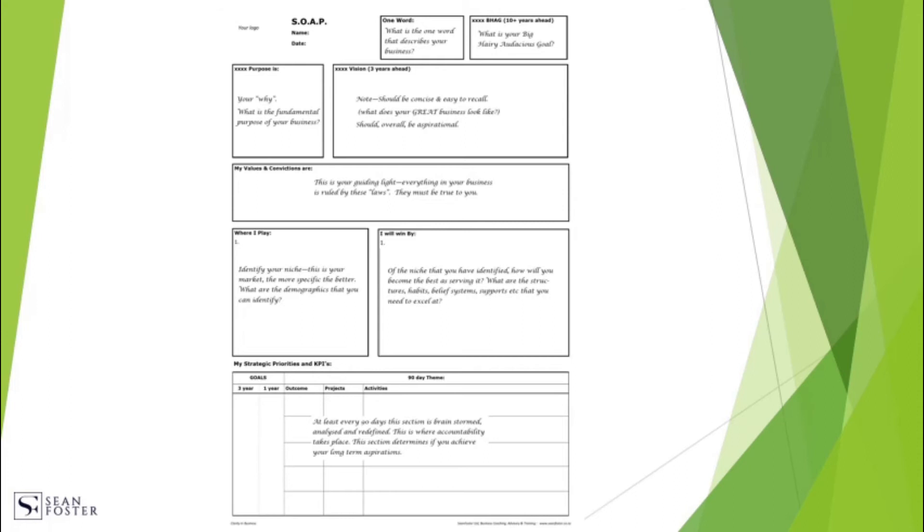But what is key is understanding that there are three main portions of your SOAP. The first bit is all about you. What is your overall purpose, your values, your longer term vision for the company? This is crucially important because if you get everybody on board with the bigger picture thinking, then you have the best opportunity of ensuring that everybody is giving 100% of their effort to the business.